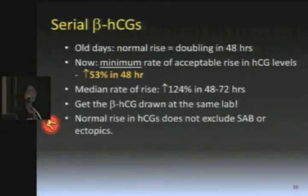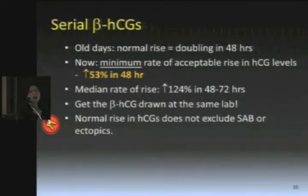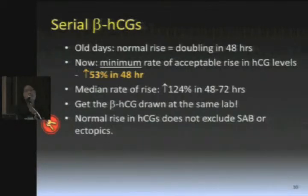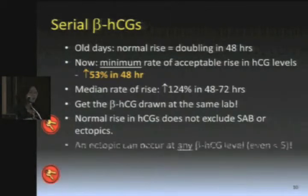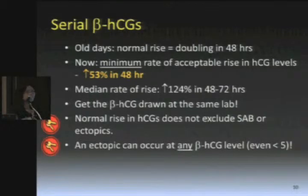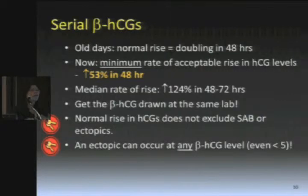These next two points are really important. First, a normal rise in HCG does not exclude a spontaneous abortion or an ectopic. Most of the time with ectopics you'll see a slower rise, but they can also have a normal rise and still have an ectopic. And there is no beta HCG level at which you can exclude an ectopic. It used to be thought that if the beta HCG was really low or very high — like over 20,000 — it was not likely to be an ectopic. That's not true. You can have it at any level.